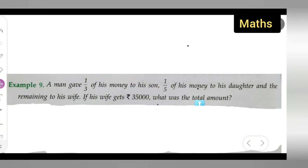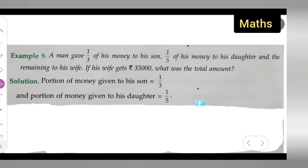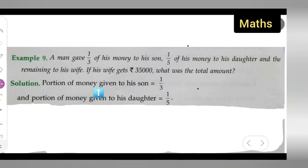Let us see how to solve this. You can write down the portion of money given to his son - a man gave 1/3 of his money. So the portion of money given to his son is 1/3, and the portion of money given to his daughter is 1/5 of his money.